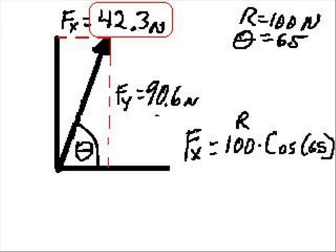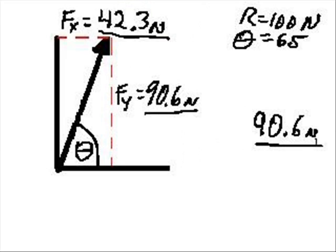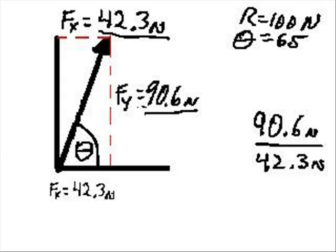That's what we got so far. Now let's check our work and make sure we've got everything correct. Now opposite angle theta is 90.6 newtons. That's the opposite side. The adjacent side would be 42.3 newtons. Opposite 90.6 newtons, adjacent 42.3 newtons. That's tangent.